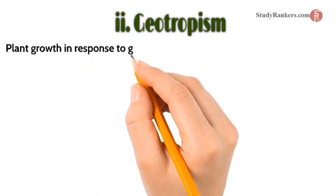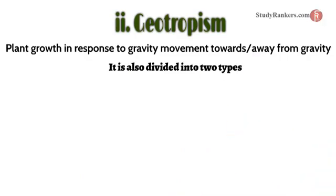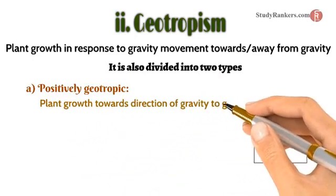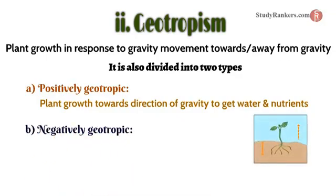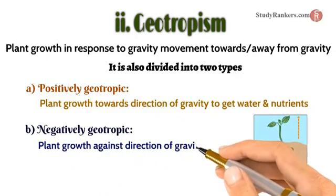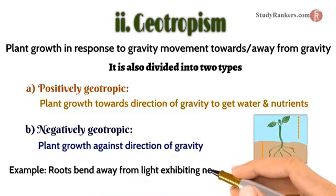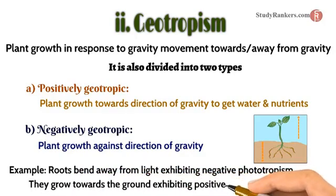Second is geotropism — plant growth in response to gravity, movement toward or away from gravity. It is divided into two types: positively geotropic, where the plant grows toward the direction of gravity to get water and nutrients, and negatively geotropic, where the plant grows against the direction of gravity. For example, roots bend away from light, exhibiting negative phototropism, and they grow toward the ground, exhibiting positive geotropism.